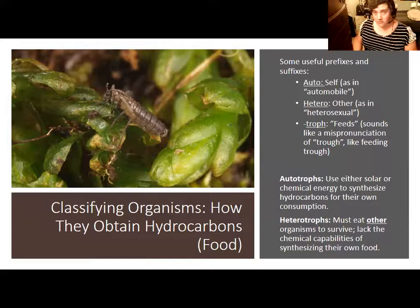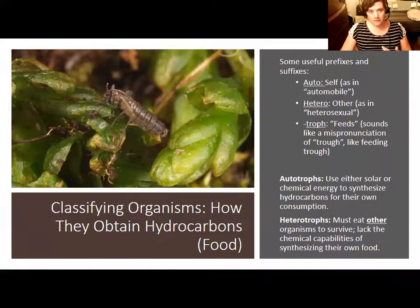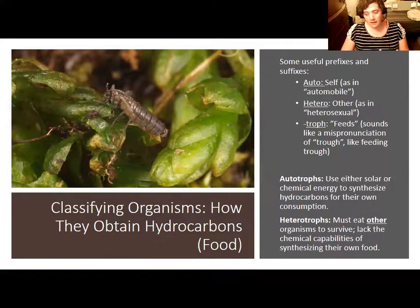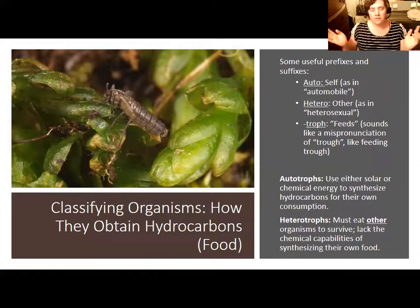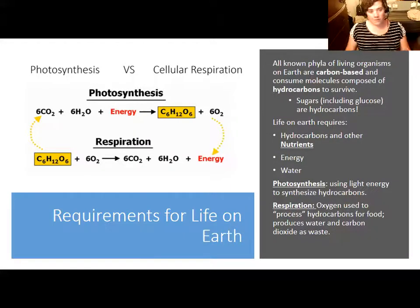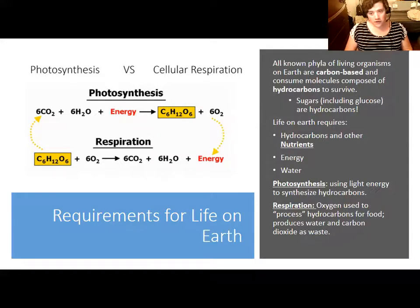Autotrophs are organisms like plants, which use solar energy. We humans, like all other animals as well as fungi and the vast majority of microorganisms, are known as heterotrophs, because we have to eat something else to survive. The 'hetero' in heterotroph means other or opposite — like the way heterosexual refers to people of opposite genders. So in its simplest explanation, hydrocarbons are synthesized inside the cells of plants or other photosynthetic organisms.